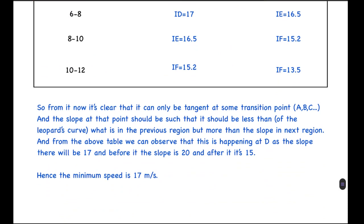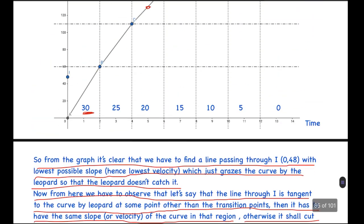So from here what we can conclude is that it's clear that it can only be tangent at some transition point A, B, or C, and so on. And the slope at that point should be such that it is less than that of the leopard's curve in the previous region, but more than the slope in the next region.